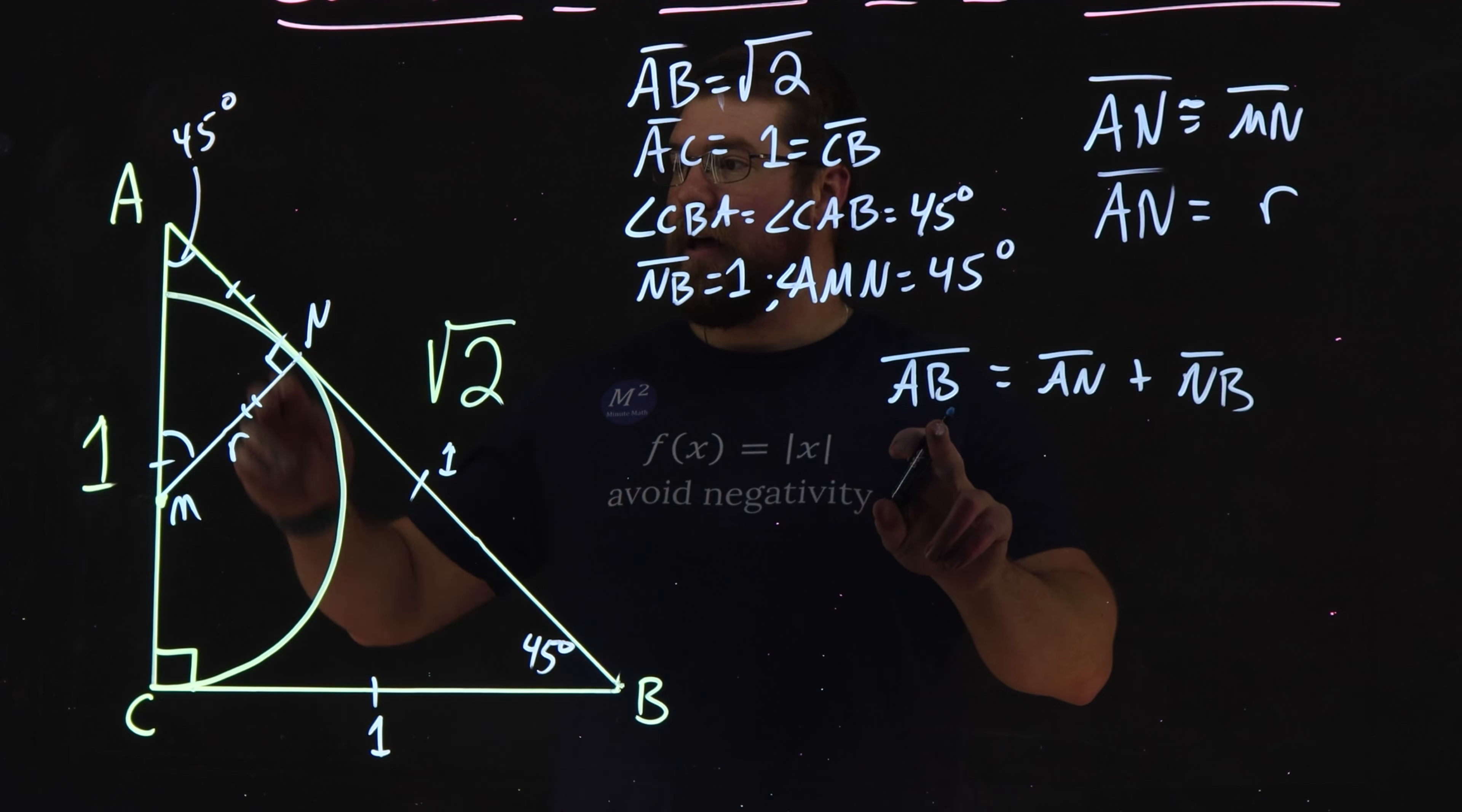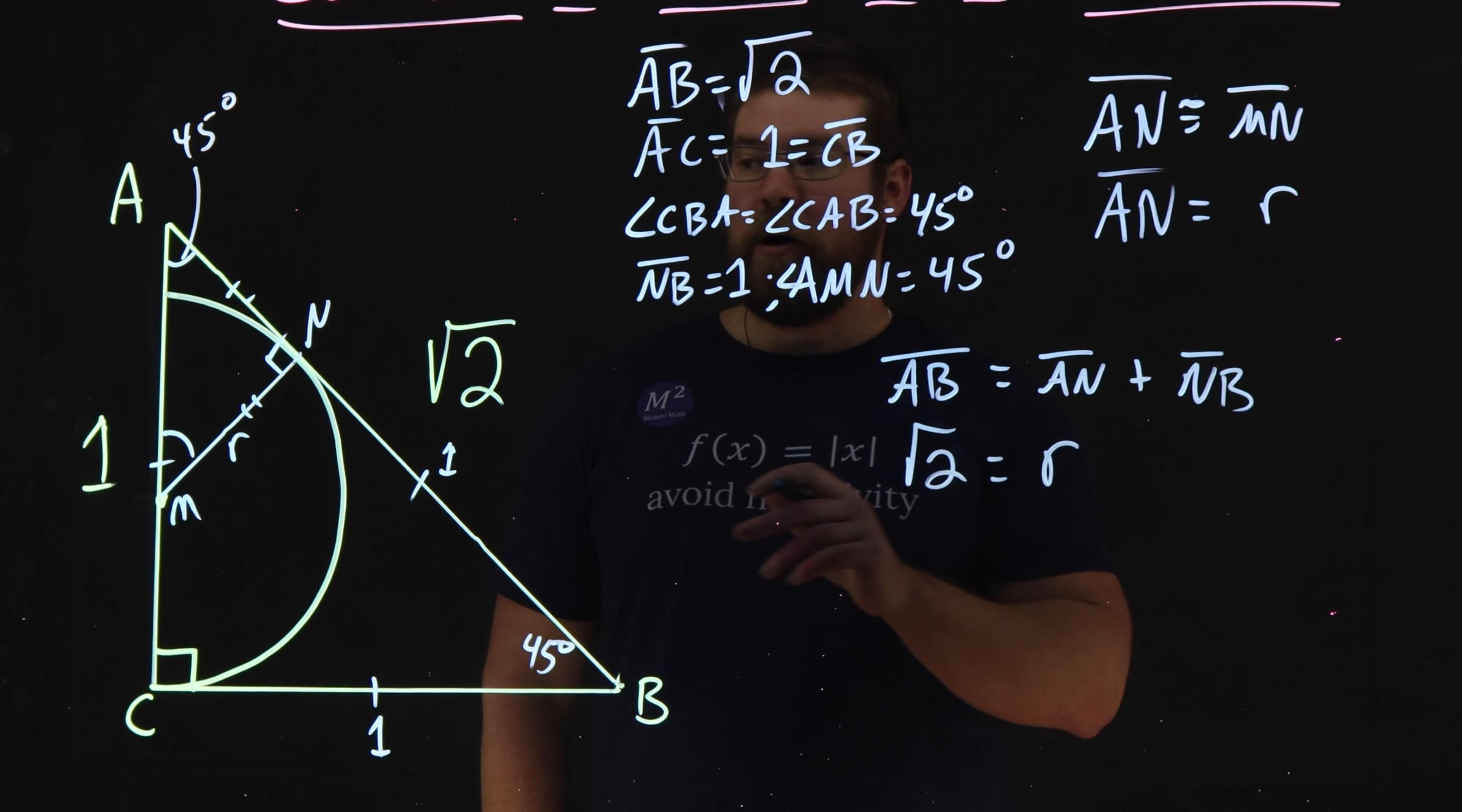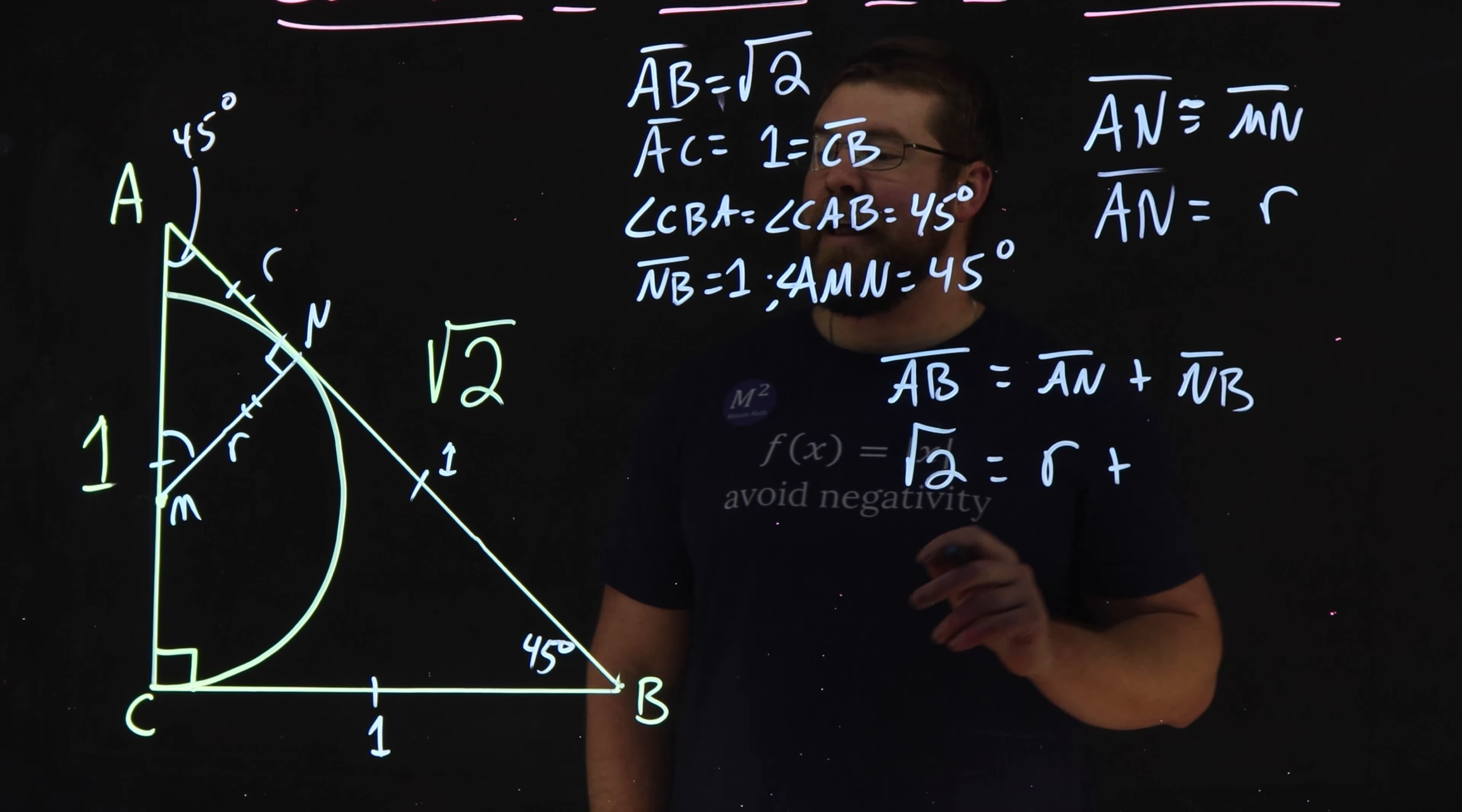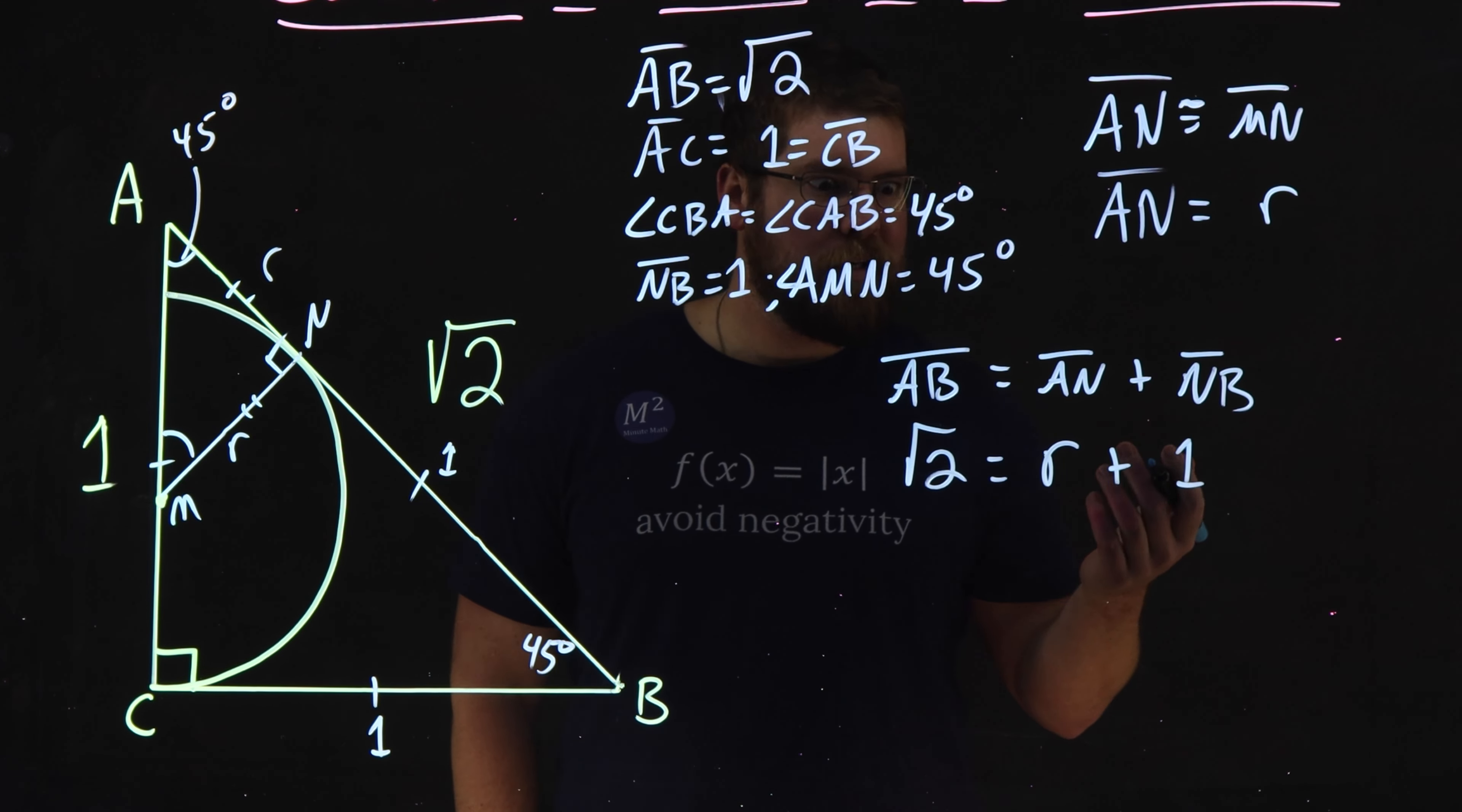AB has a length of square root of 2, that was given from the beginning. The length of AN we know is R, our radius, because they're congruent to MN, which we already shown, plus the length of NB. NB coming down is a length of 1. We already got that. Makes it pretty easy.